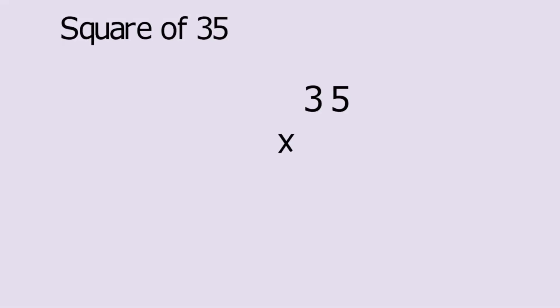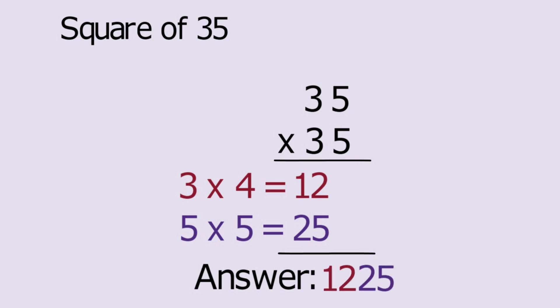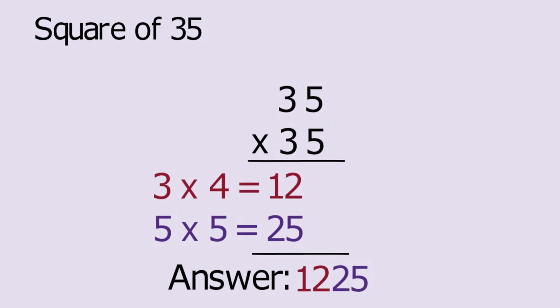For example, to square a number 35, we simply multiply the first digit that is 3 by the next higher digit that is 4. Then attach 25. Since 3 x 4 is equal to 12 and 5 x 5 is equal to 25, the answer is 1225. Therefore, the square of 35 is 1225.